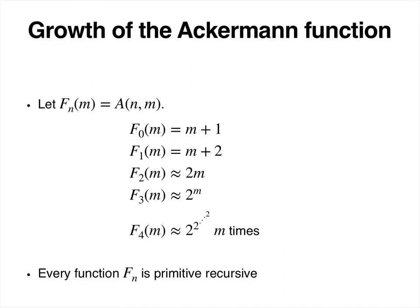Let's fix f_n as the first component of the Ackermann function, and look at it as a unary function in the second component. You'll see that the first function is m + 1, the second component function is m + 2, then f_2 is approximately 2m, and f_3 is 2^m.